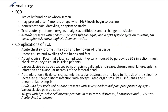Hematological conditions — sickle cell disease: typically found on newborn screen; may present after 4 months when HbF levels begin to decline. Complications include bone and chest pain, dactylitis, priapism, or stroke. Treatment of acute symptoms: oxygen, analgesia, antibiotics, and exchange transfusion. Case: 4-month-old with pallor, splenomegaly, and a grade 2 systolic ejection murmur (anemic murmur); hemoglobin electrophoresis shows high HbS concentration.